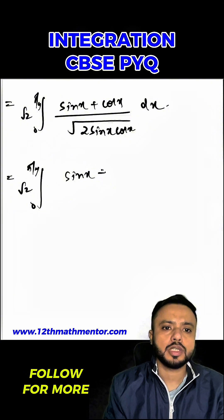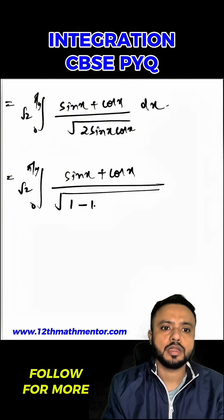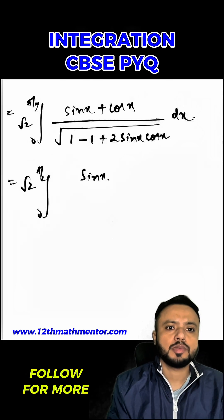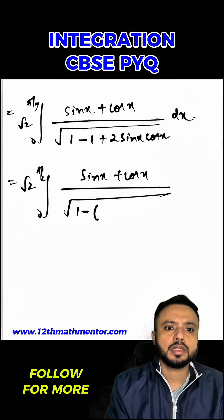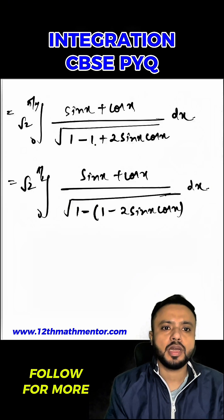Root 2 sine x plus cos x. Now I'm going to add and subtract 1 in the denominator, so 1 minus 1 plus 2 sine x cos x dx. So I can write it as root 2 sine x plus cos x upon root of 1 minus 1 minus 2 sine x cos x dx.